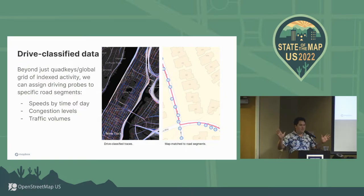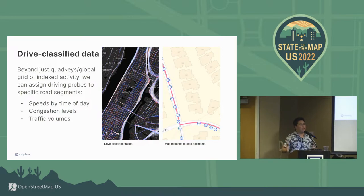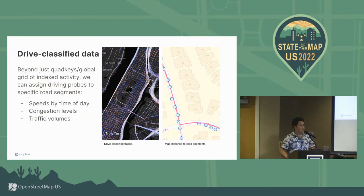That has nothing to do with road segments directly — it's just activity on a grid. This is an OpenStreetMap conference, so let's talk about roads. When this data comes in, we also drive-classify these segments: we run them through a modality classifier and identify what type of modality they most likely are. For every drive-classified route — here's a snapshot of Manhattan — we map-match those roads against our internal segment data.